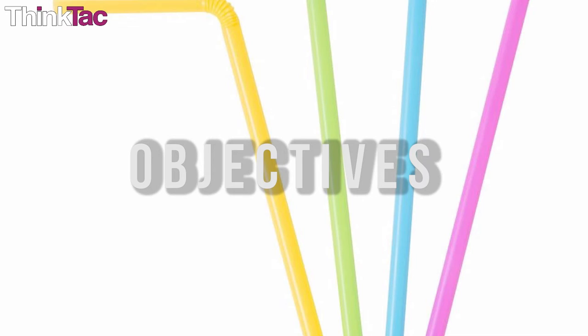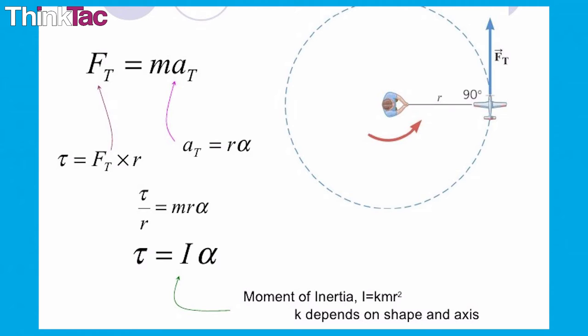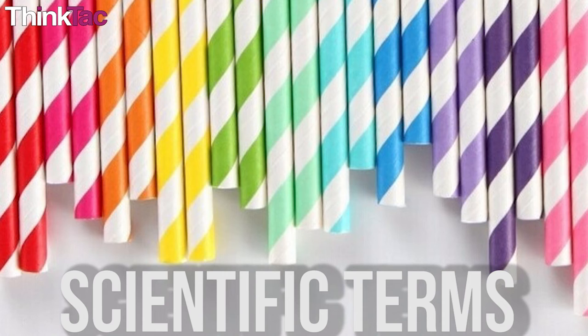Some learning objectives from this particular activity: verifying Newton's third law by demonstrating how the propeller rotates in the opposite direction, Newton's second law which determines the speed of rotation that is dependent on the torque and moment of inertia of the rotating straw. Some scientific terms.